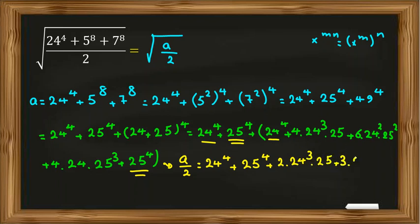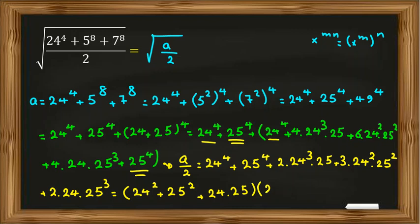2 times 25. Next one is 3 times 24 squared, 2 times 25 squared, plus 2 times 24 times 25 squared. Now we can write it as 24 squared plus 24 times 25 squared plus 24 times 25.